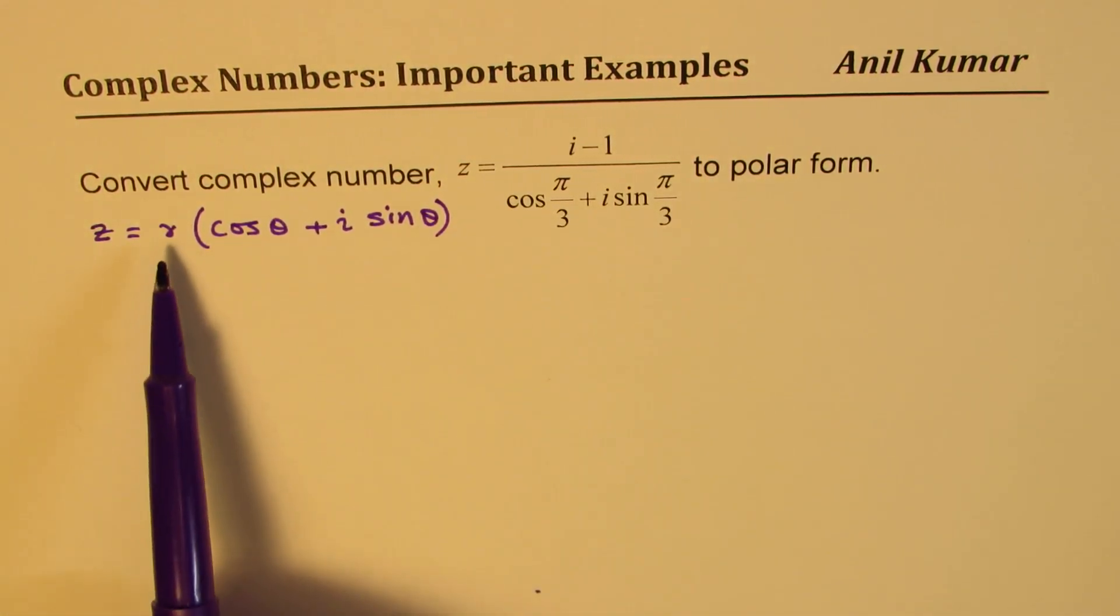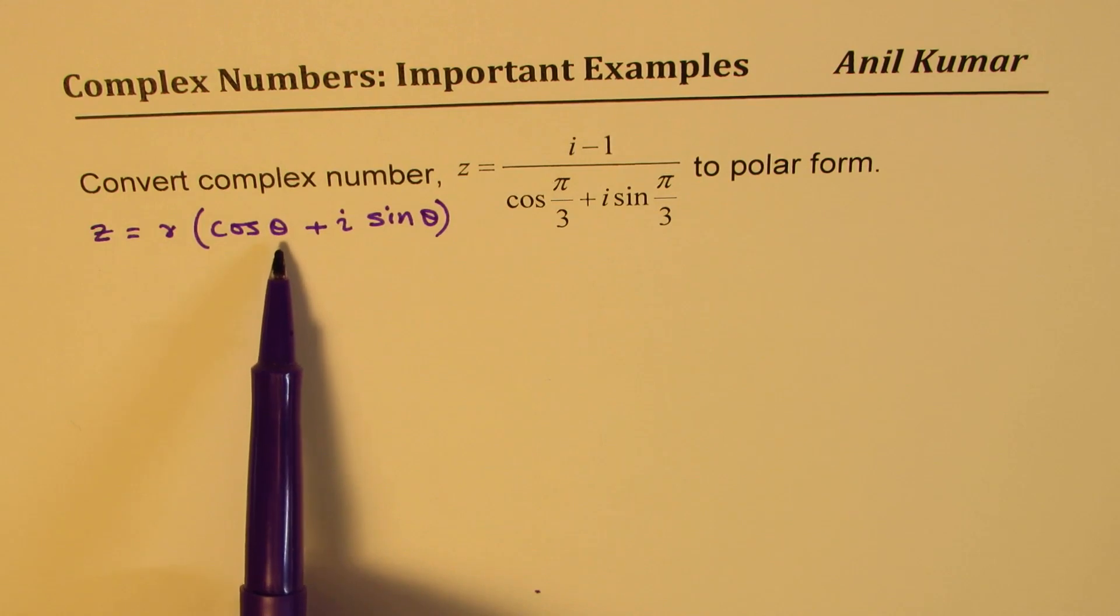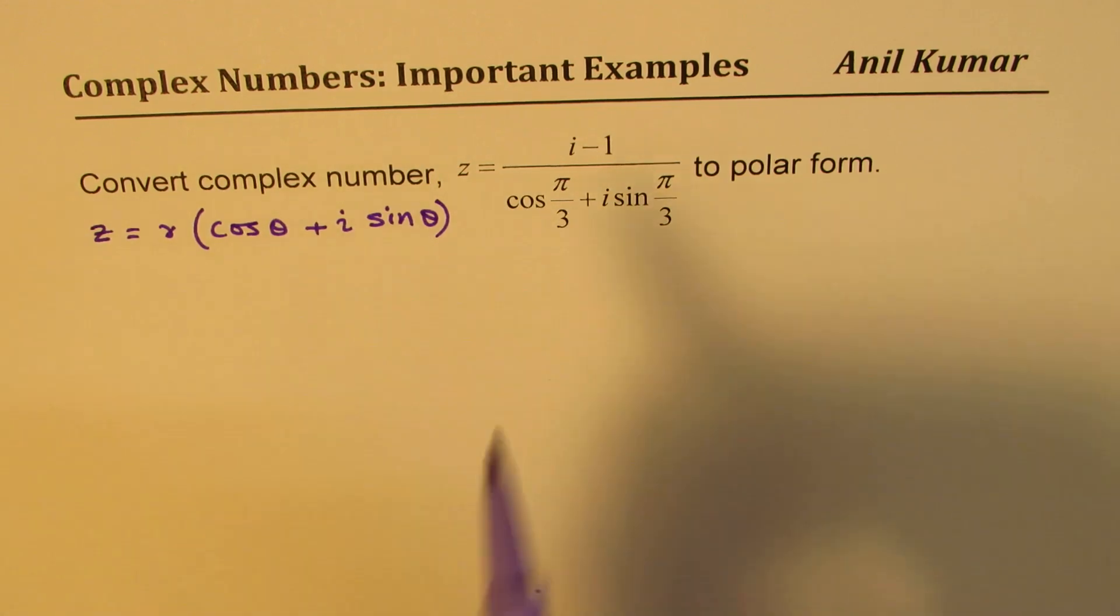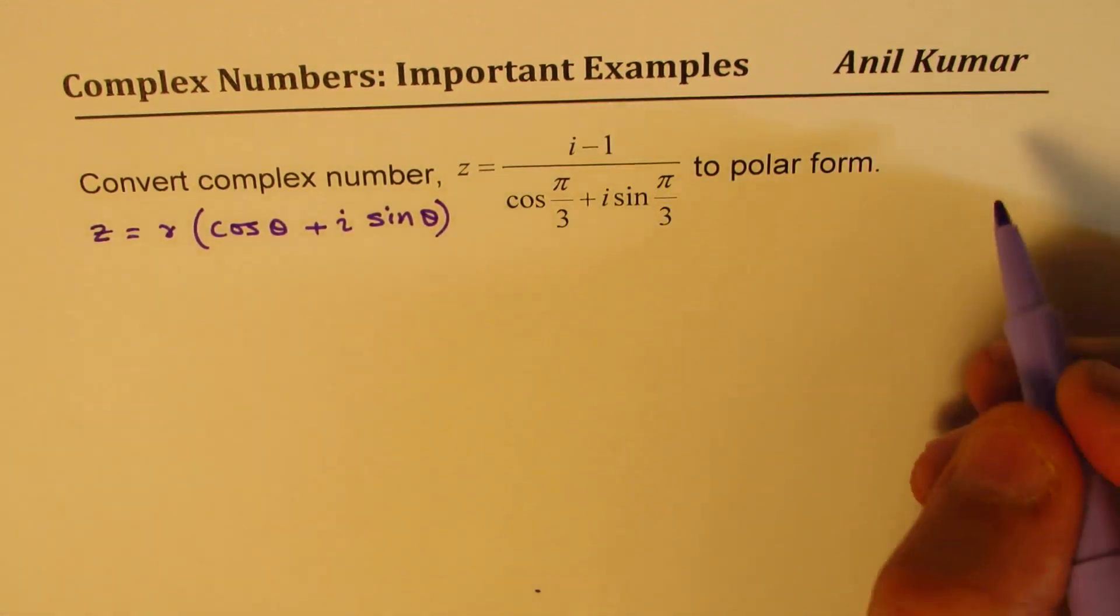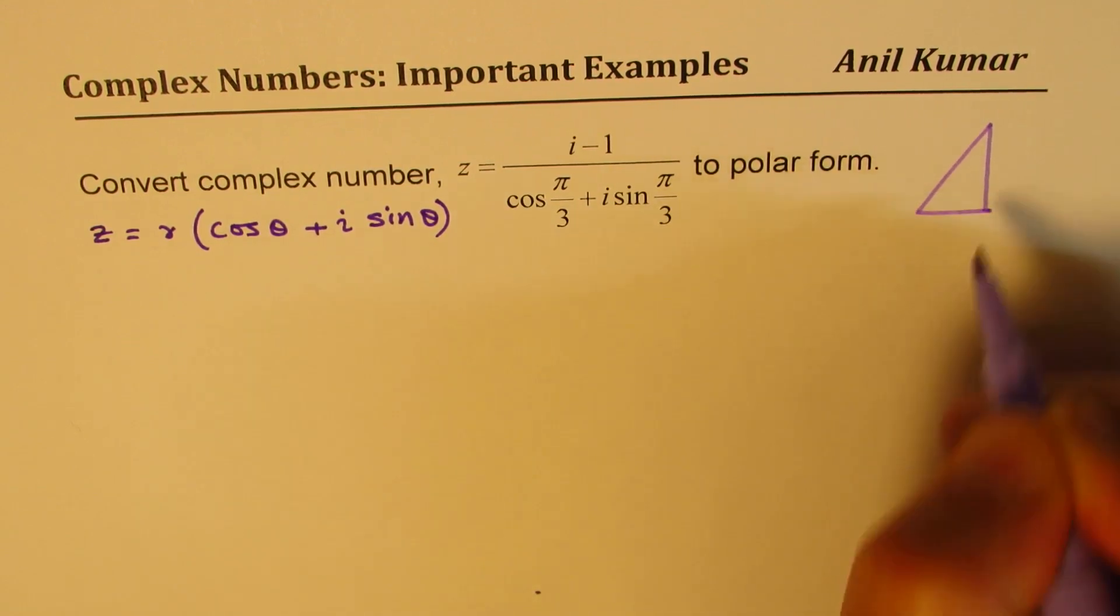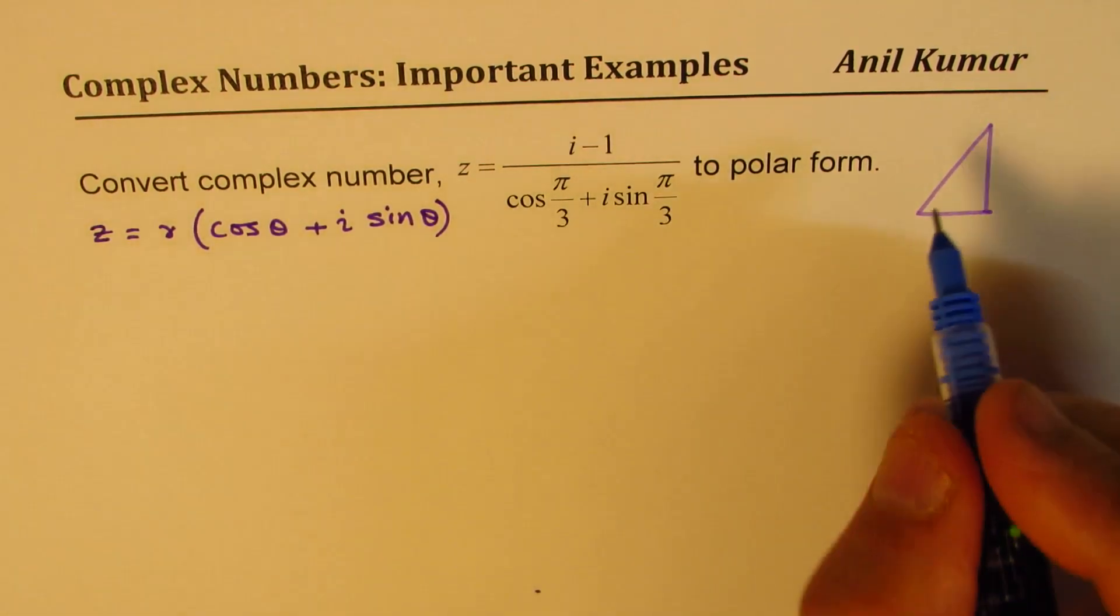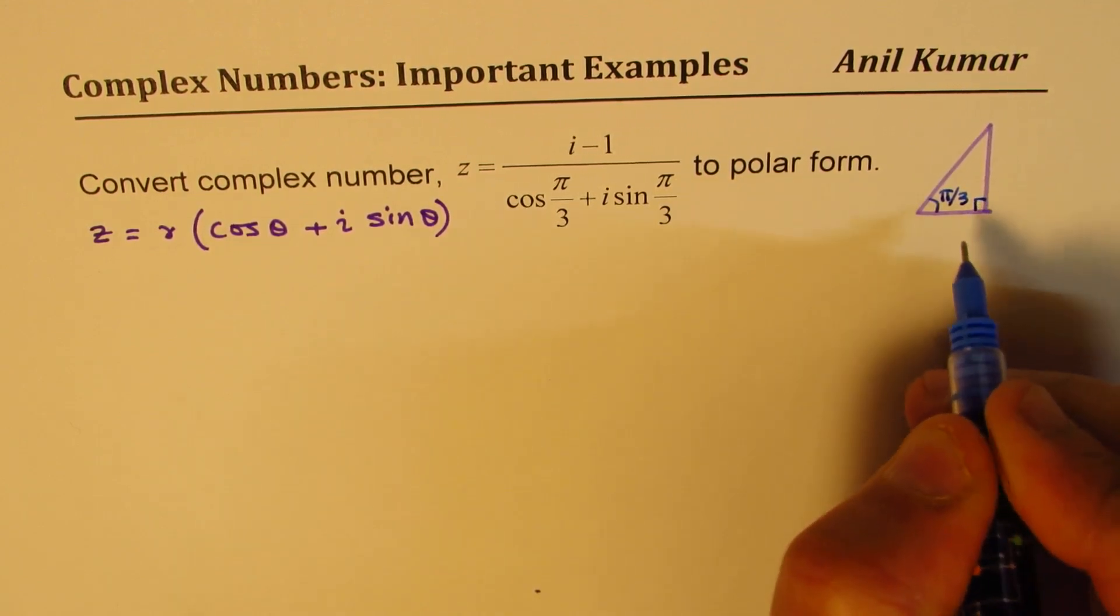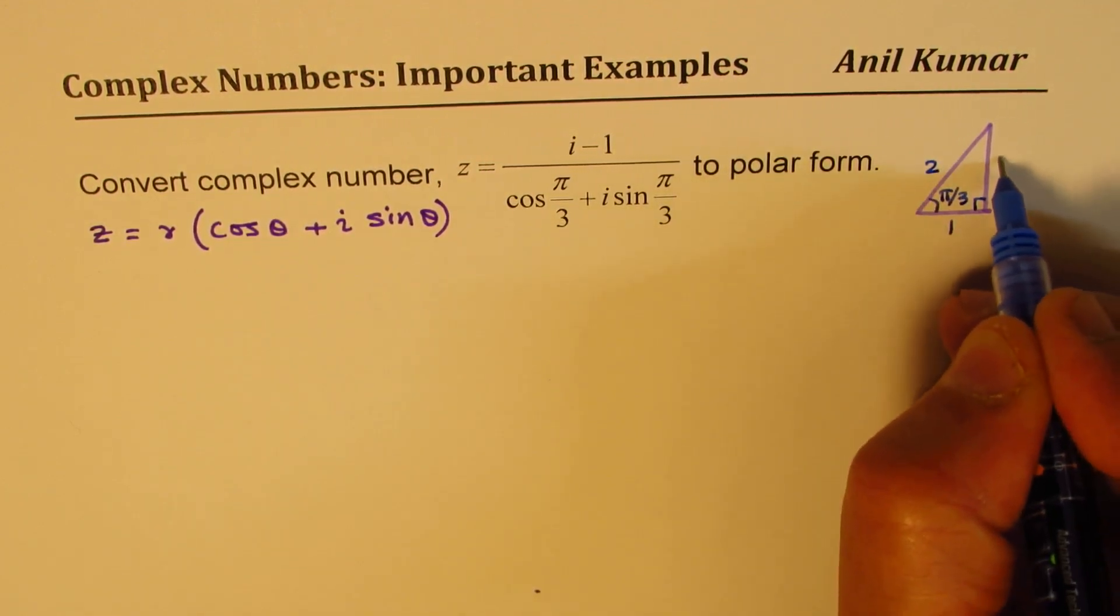So that is the polar form we are interested in writing. Basically we need to find the magnitude r and the argument θ. So these are the two things which we need to calculate. Now how should we go about? Let's think about writing this in numbers. π/3 reminding you of the triangle which can give you the values directly. The sides are 1, 2 and √3.